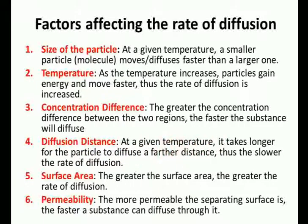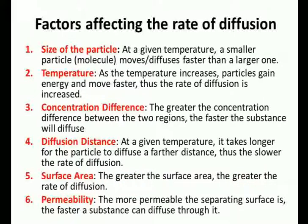Fourth, diffusion distance: at a given temperature, it takes longer for a particle to diffuse a greater distance, so the rate of diffusion is slower over longer distances. Diffusion is inversely proportional to distance — if the cell or area is larger, diffusion is slower. Fifth, surface area: the greater the surface area, the greater the rate of diffusion. A particle in a narrow area diffuses slower; in a broad area with greater surface area, diffusion is faster.